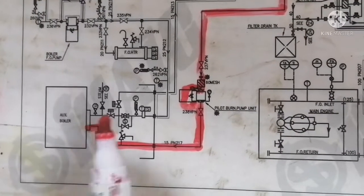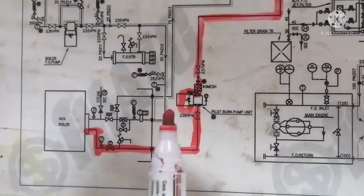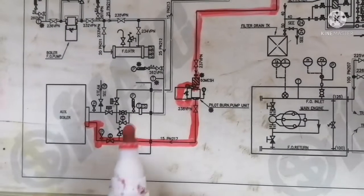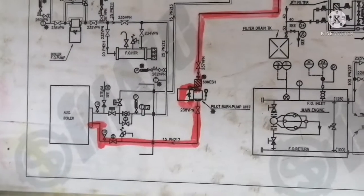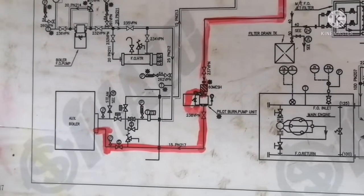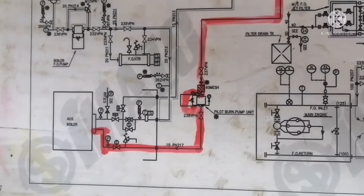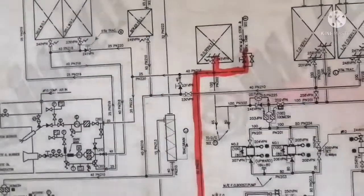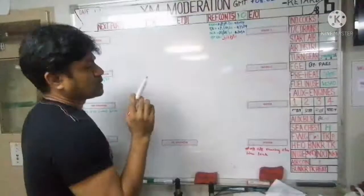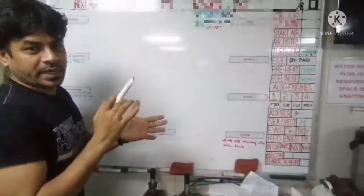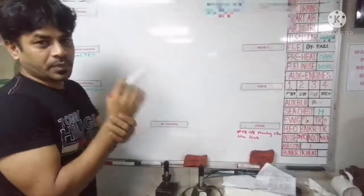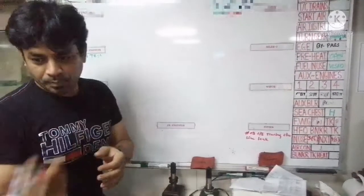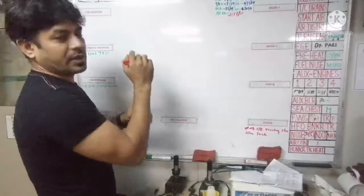This is a very simple line. It just takes suction from the service tank, goes via the filter to the suction of the pump, and then goes directly to the auxiliary boiler pilot burner. I have now explained the auxiliary boiler pilot burner line using the pipeline drawing.